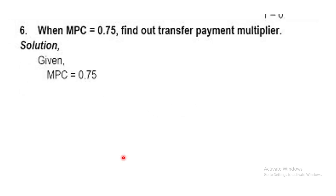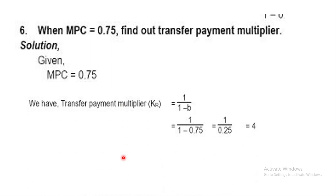Question 6: MPC = 0.75, find the transfer payment multiplier. The formula is K = 1 upon (1 minus MPC) = 1 upon (1 minus 0.75) = 1 upon 0.25 = 4.